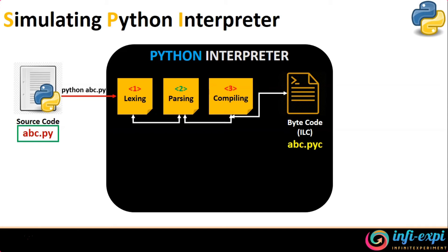This bytecode is called intermediate language code (ILC), and its file extension is .pyc — the Python class file. A similar principle happens in Java as well, but in Java the source code is compiled by the compiler before the compiled code is given to the interpreter, so the compiler sits outside the interpreter. In Python, the compilation process happens internally inside the interpreter at runtime. That's why you can quickly hand over your file to the interpreter and it starts executing it.